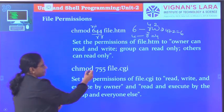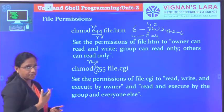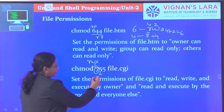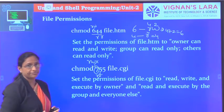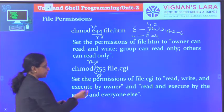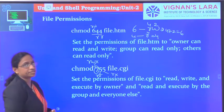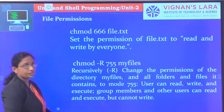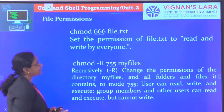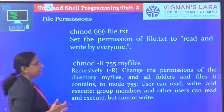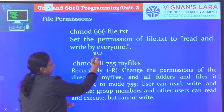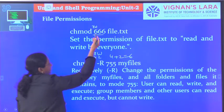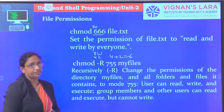Another example: chmod 755, where 7 means read, write, and execute (4+2+1) for the owner, and 5 means read and execute (4+1) for the group. Similarly, others are also given read and execute permission. And chmod 666 means all categories of users are given read and write permission, since 4 plus 2 equals 6 for user, group, and others.